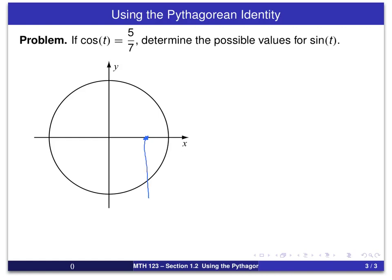And what we're asking for then are the possible y coordinates or the possible values of sine of t. We draw in a vertical line here. We'll see that this intersects the circle in two points. And these then would be, as we move over to the y axis, the possible values for the y coordinate or for sine of t. So we should get two solutions for sine of t out of this.